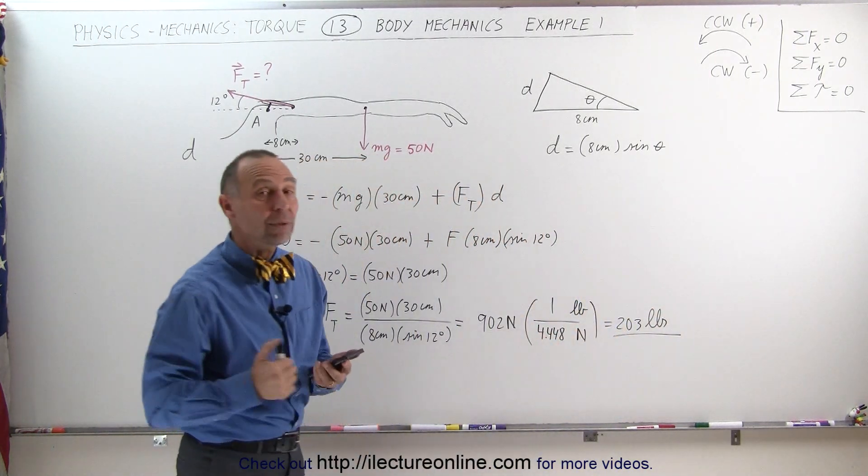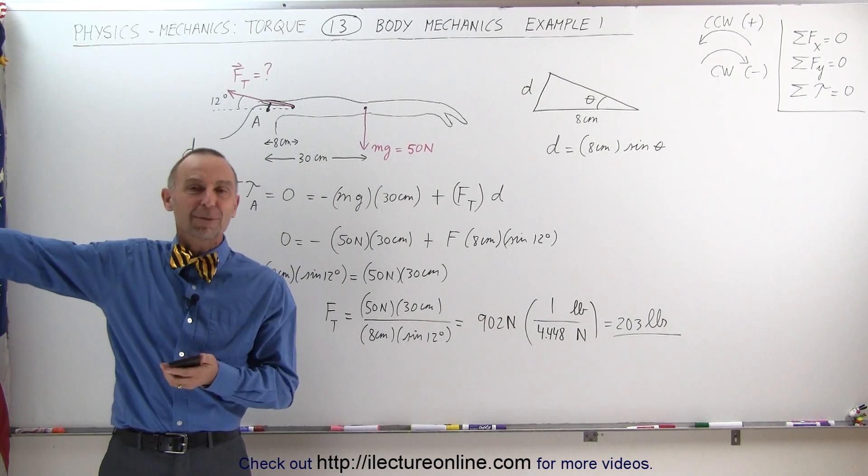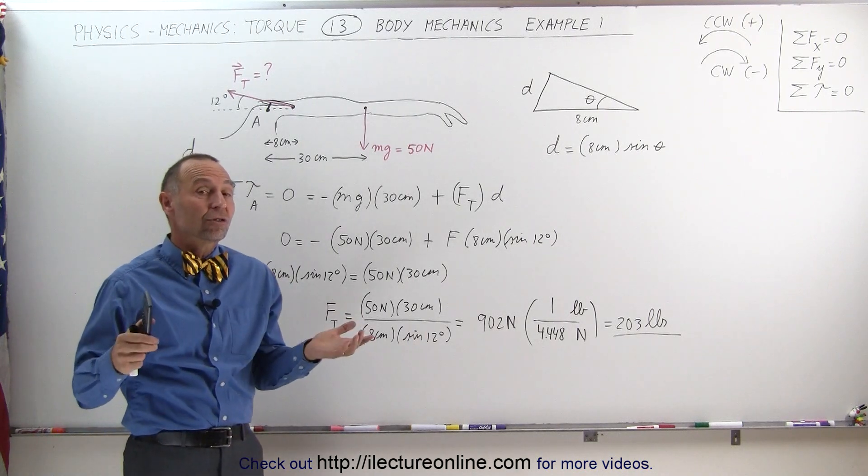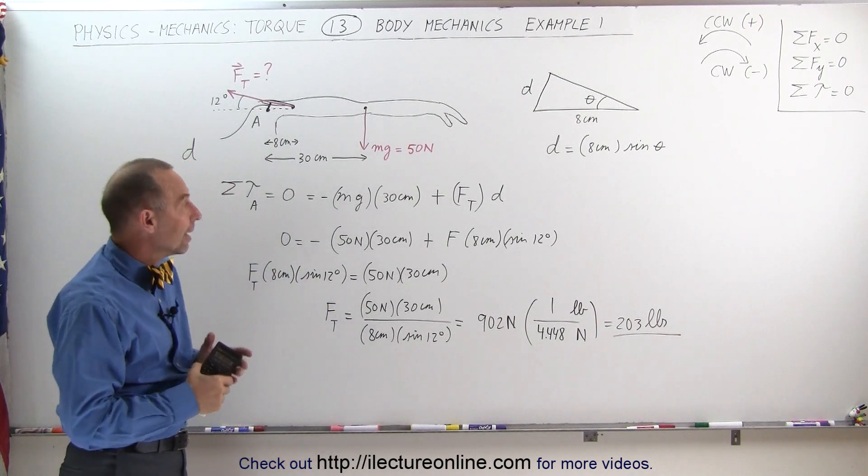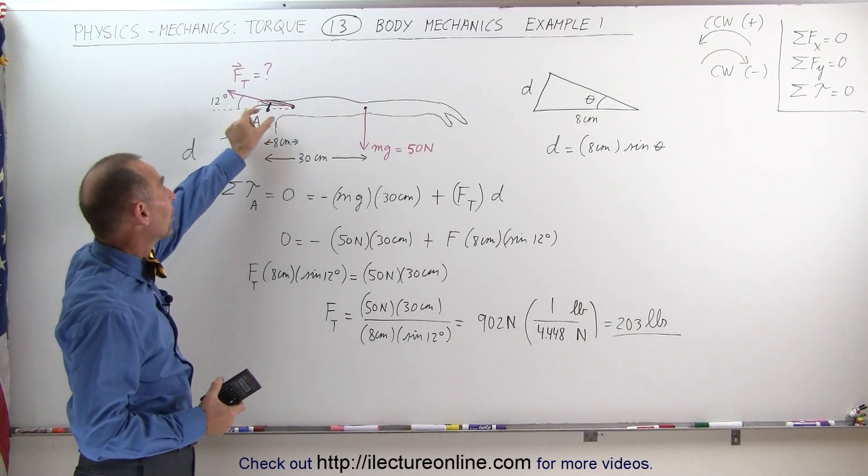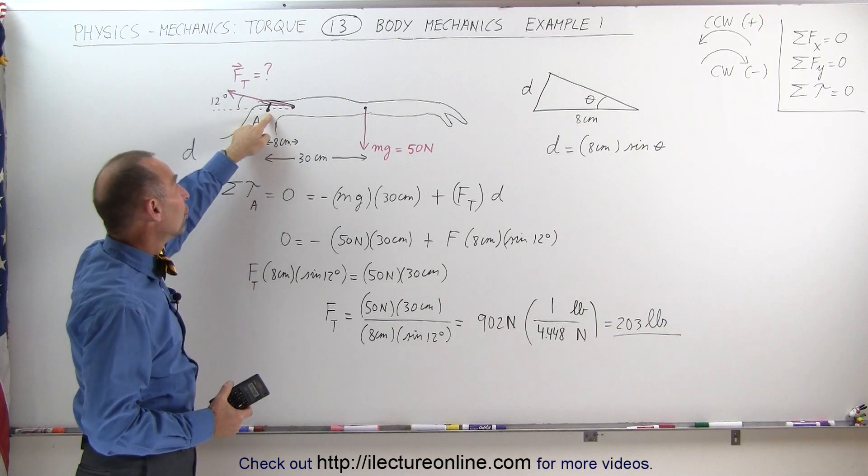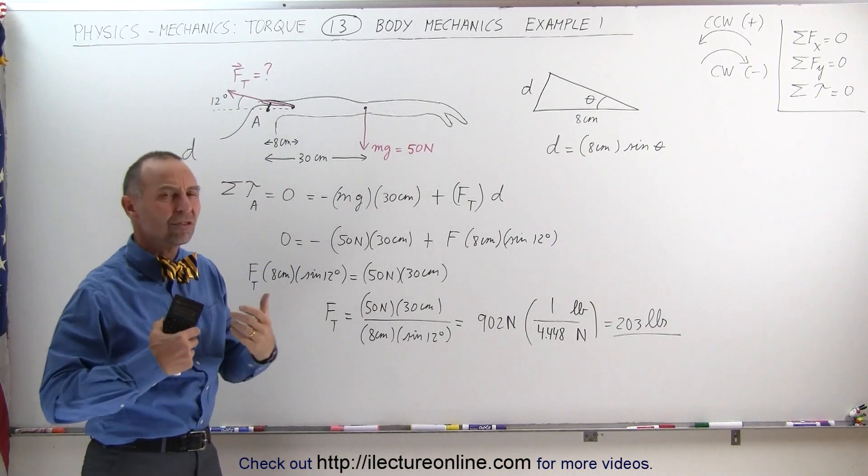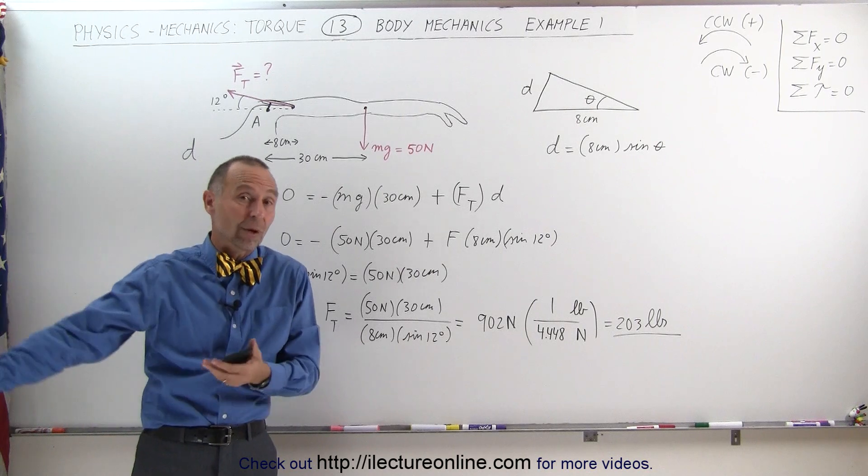So your tricep has to apply a force of about 200 pounds in order to lift up your arm here and keep it in that position. That's quite something. The skeletal structure and the way the human body works and the way the muscles move the body is actually amazing when you think about it. There's only certain ways in which that can be done, and it always requires very short distances from where the muscles are attached to where the pivot point is, relative to where the center of mass or the weights are that you're trying to lift. Therefore, the muscles in the body are actually extremely strong.